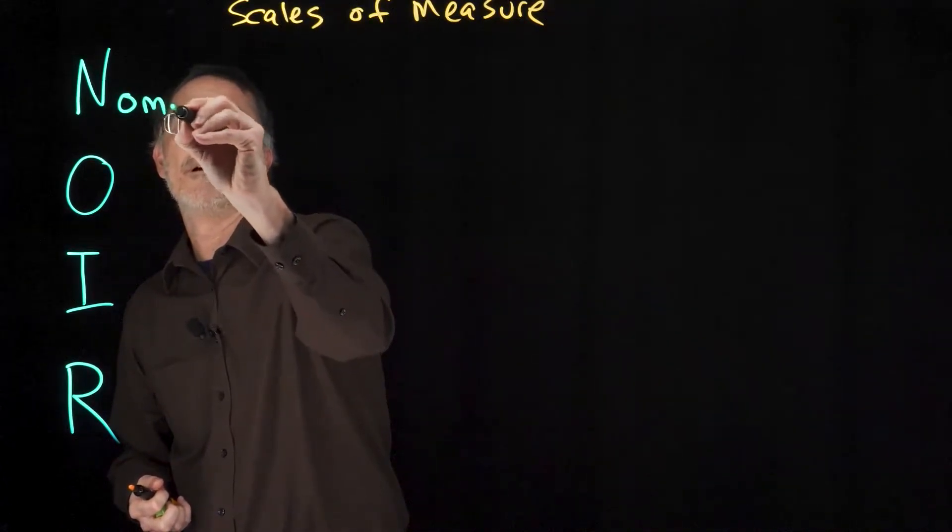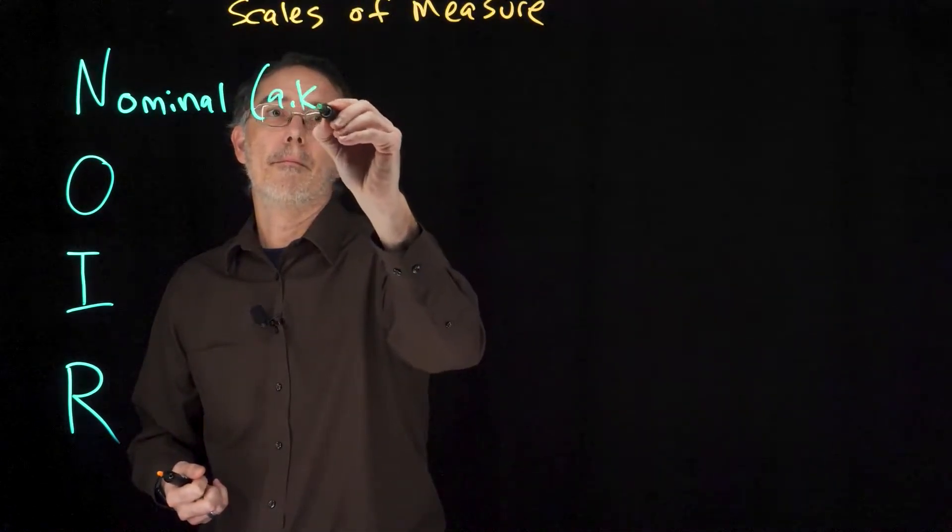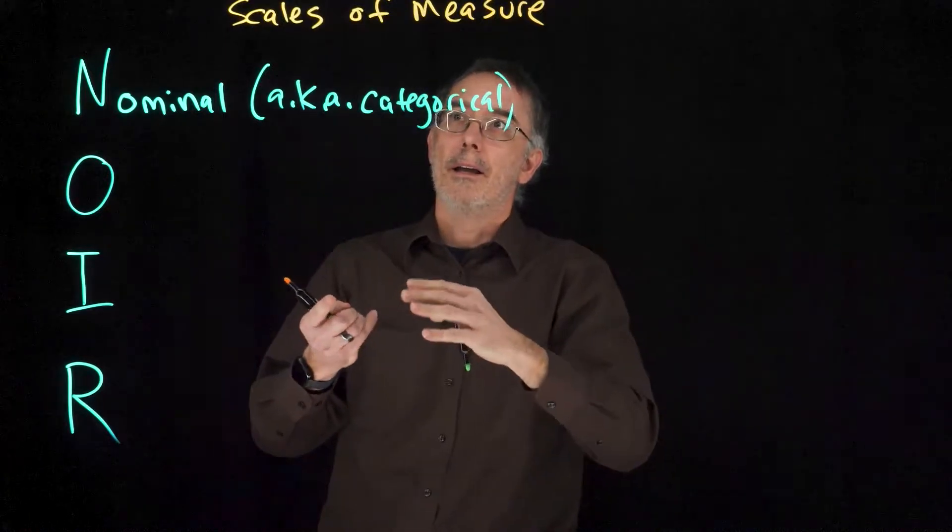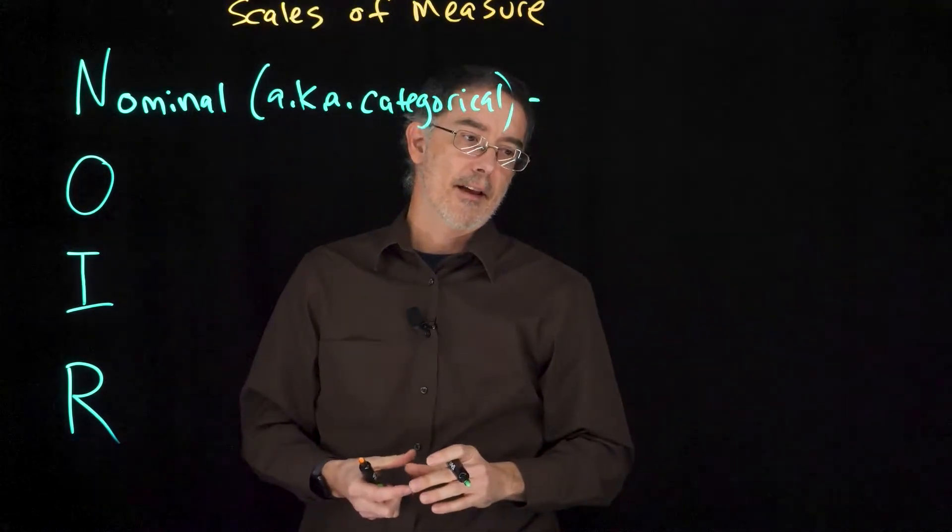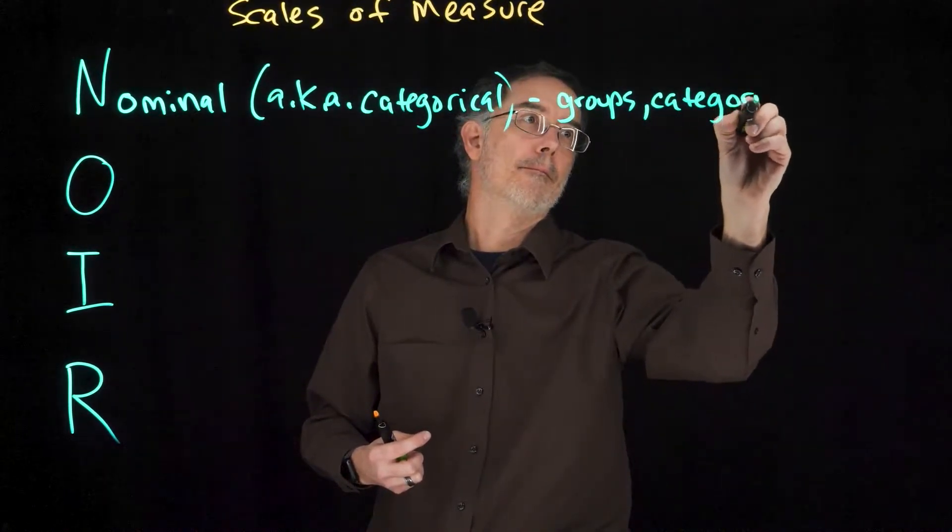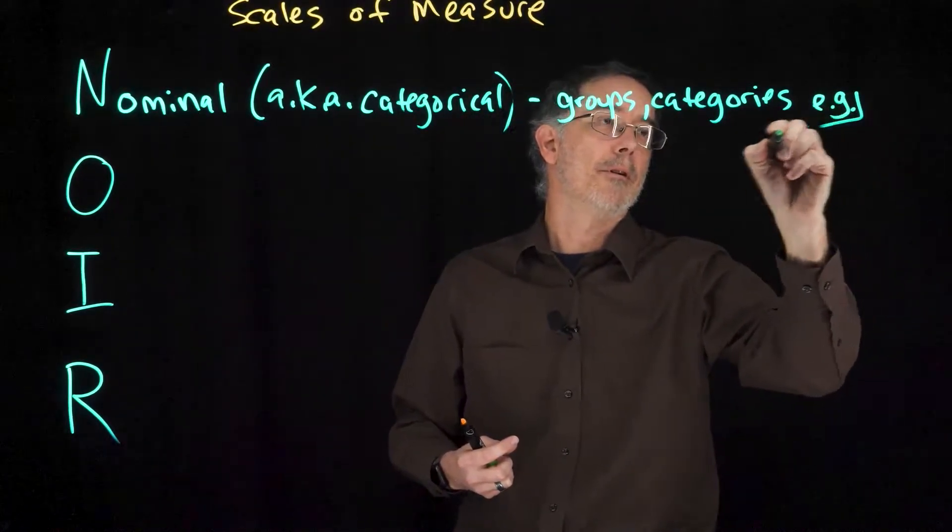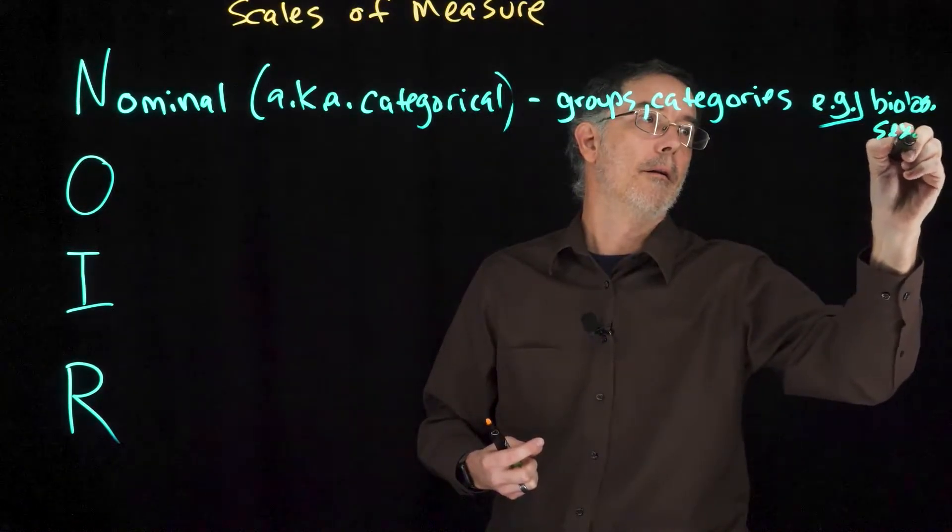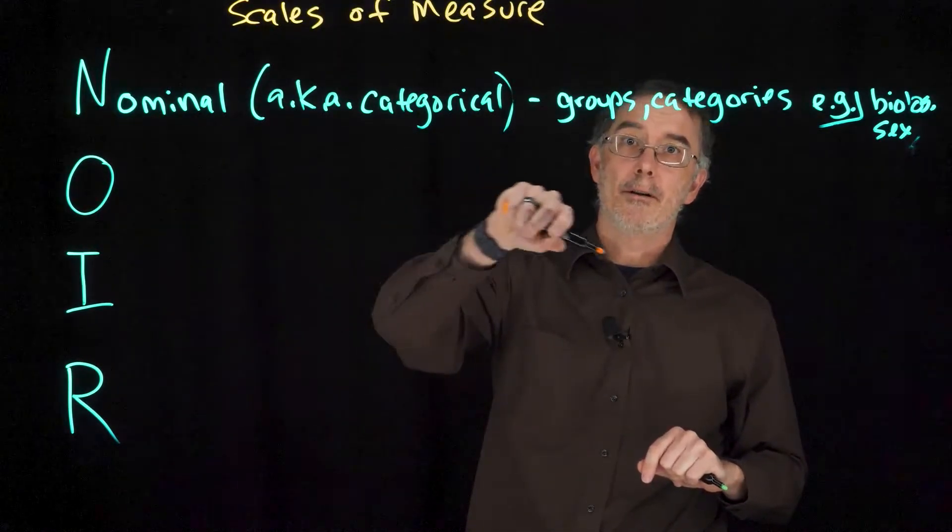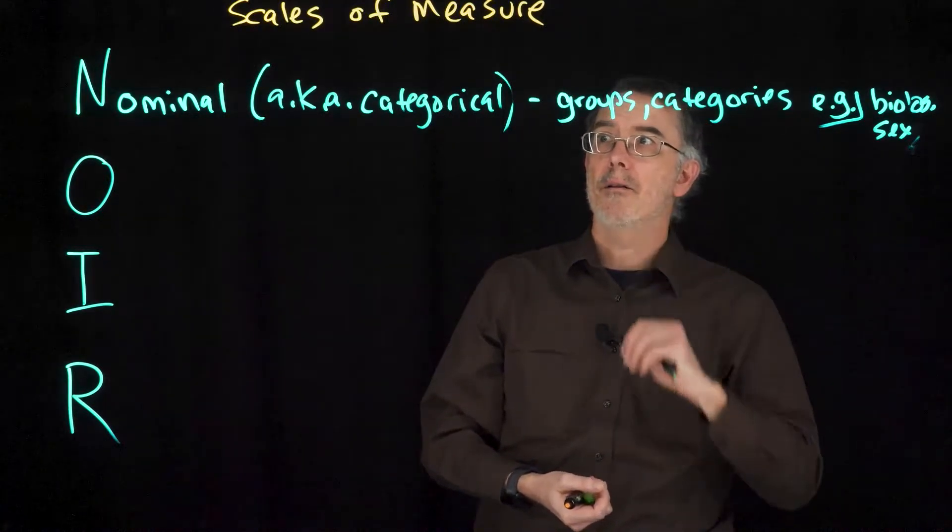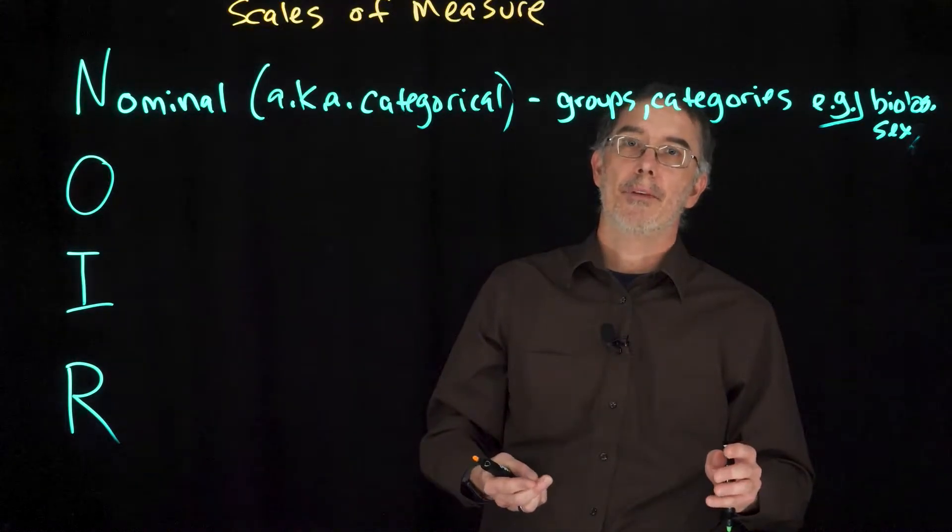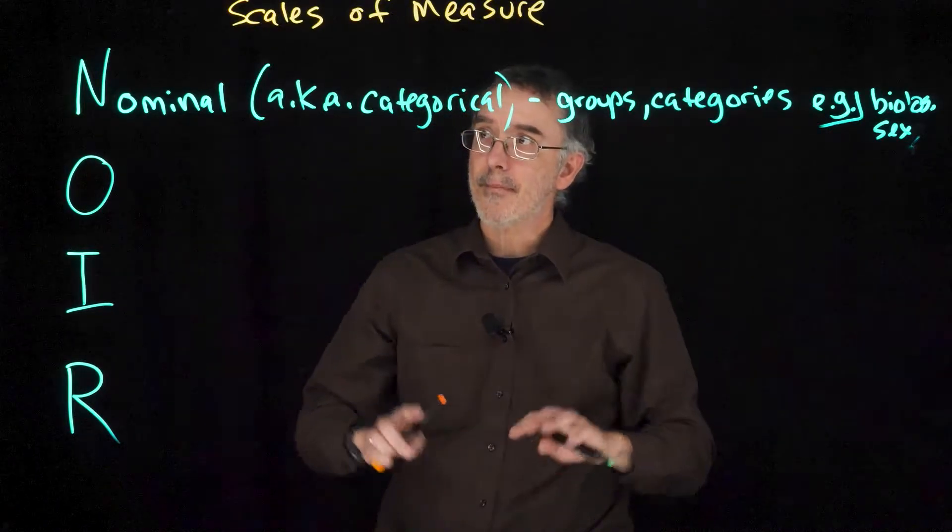N is for nominal. These are also known as categorical. Variables that are nominal have values that are groups or categories. For example, biological sex. A man or woman would be a categorical variable. Year in school, freshman, sophomore, junior, senior would be considered a categorical variable. Eye color, hair color, color of your car. Anything where you are measuring something and each observation falls into one group or one category. That is a nominal variable.